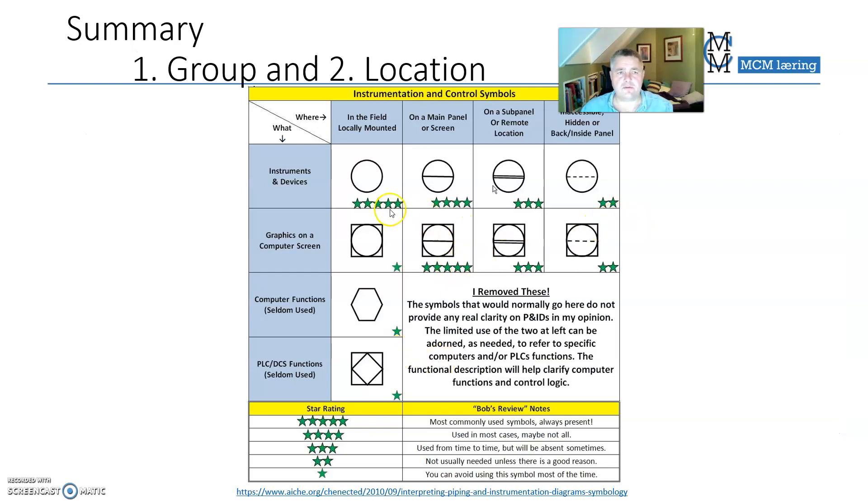Summary of all these symbols here, the group and location. The stars here show how common it is and how often you find it in the plant. This one that is found in the field is very common, and this one on the shared panel in the main control room is very common as well.